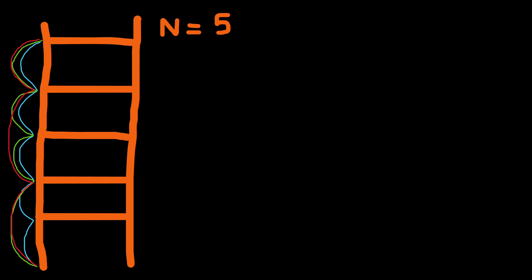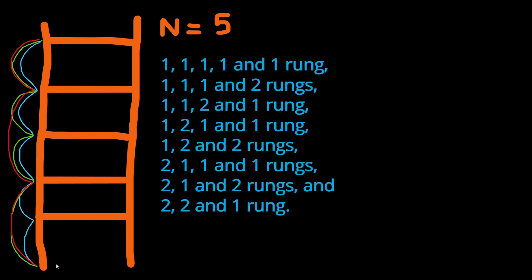And we can keep doing this until we have exhausted all the possible ways we could climb this ladder by combining steps of one or two rungs to reach the top. For this example, these are the possibilities of climbing the ladder of five rungs and we can see that we have eight different combinations that would lead us to the top of the ladder.